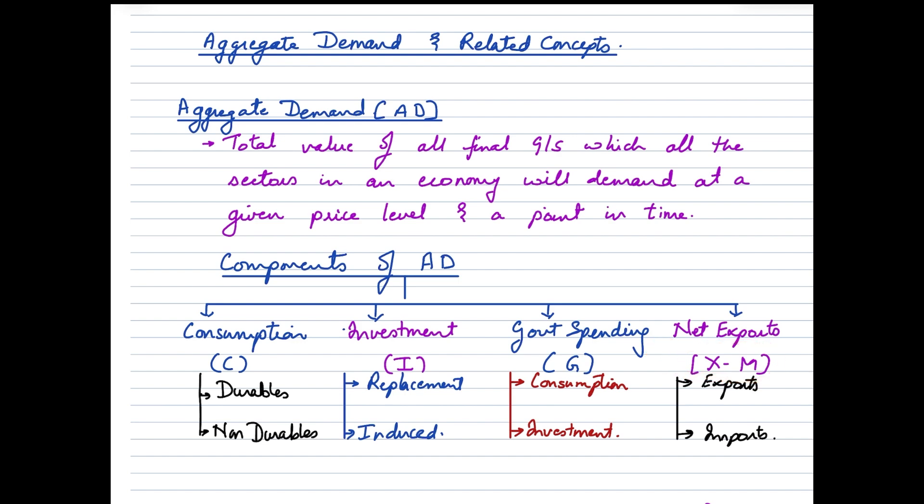Now when we talk about consumption expenditure, people would generally spend on either durable commodities or non-durable commodities. Durables are the ones that could stay for a longer period of time with the consumers so they can have repeated use of the commodity just like your phones, your cars, so on and so forth. Non-durables are single-use commodities and they get exhausted with one consumption like food and edibles.